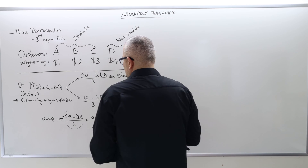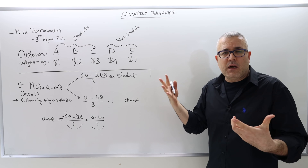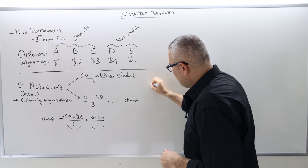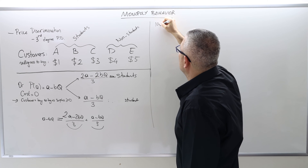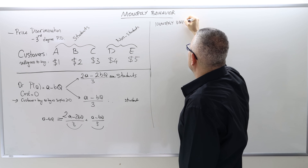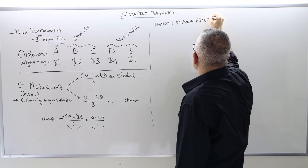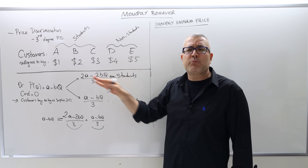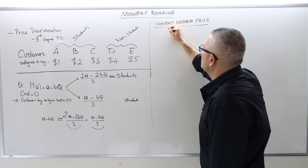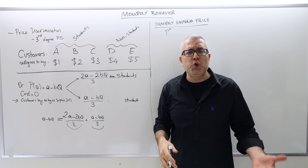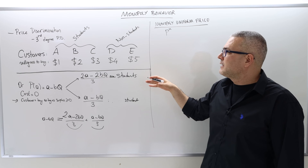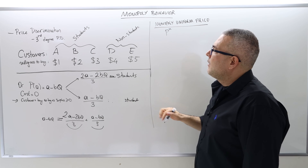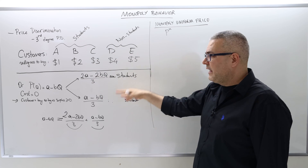First, let's calculate the monopoly uniform price — where you don't want to price discriminate and just set the same price. What would be your optimal price PM, and how much profit would you make? Then I'll ask whether you can achieve higher profit by discriminating between students and non-students. I'm going to solve the discrete case first, then the continuous case.